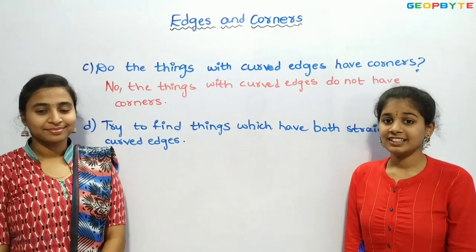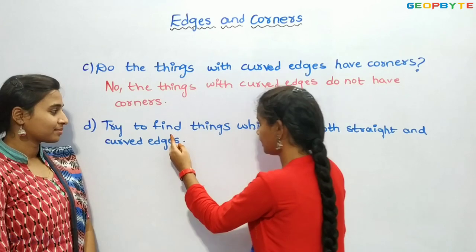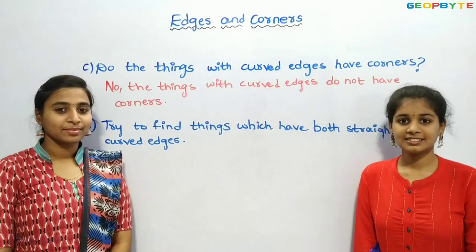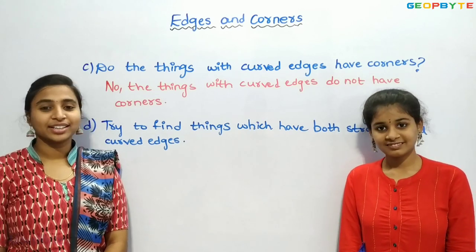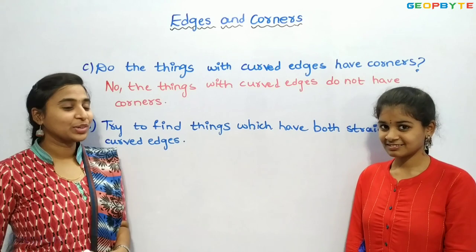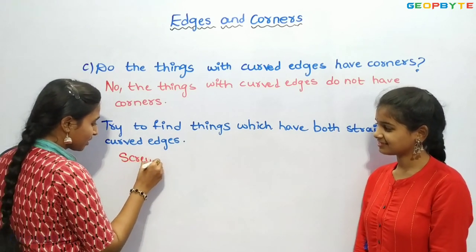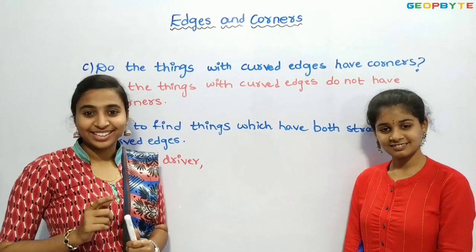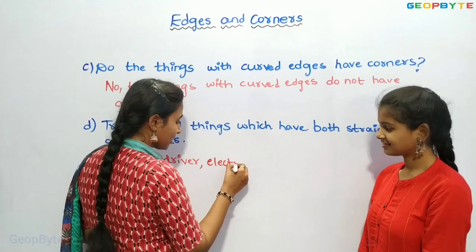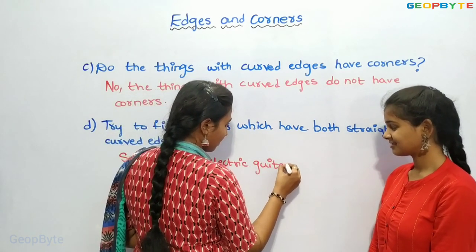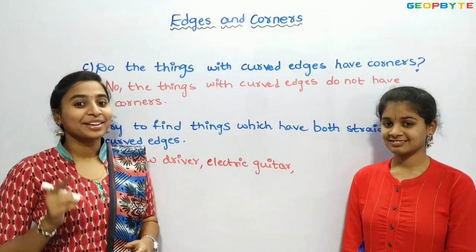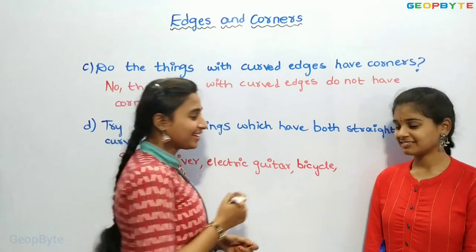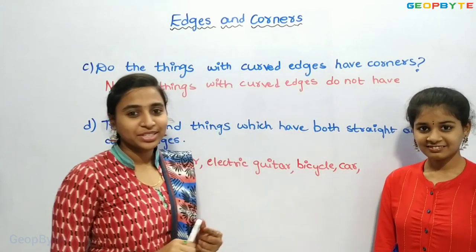Now let us see the last question: Try to find things which have both straight and curved edges. Things with both straight and curved edges are a screwdriver, an electrical guitar, a bicycle, and also an aeroplane.